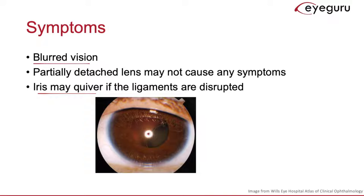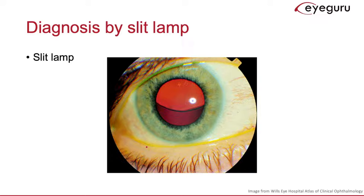Diagnosis is typically quite straightforward and done by slit lamp. This is an example of an upward lens dislocation that might be seen with Marfan syndrome, as you can see the inferior border of the lens here.